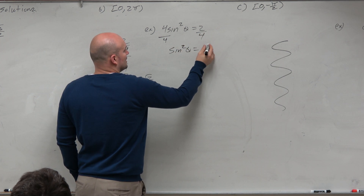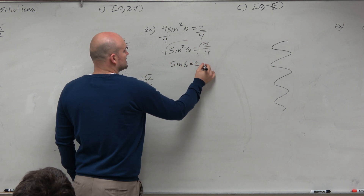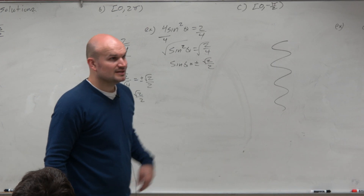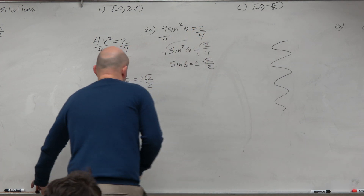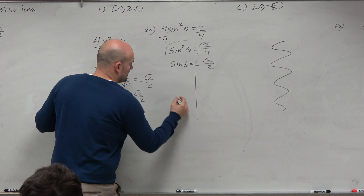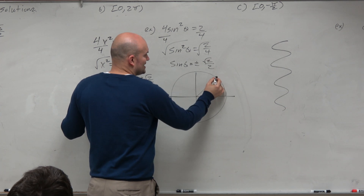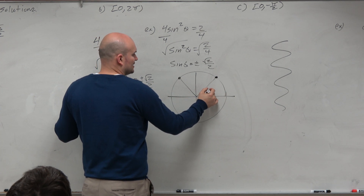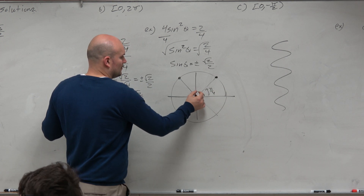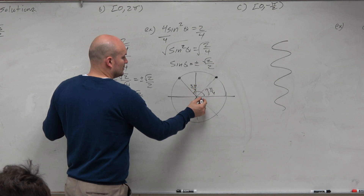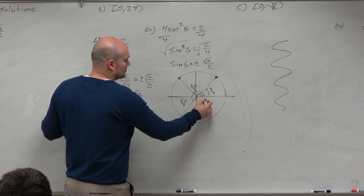So sine squared of theta equals 2 over 4. Take the square root of both sides: sine of theta equals plus or minus the square root of 2 over 2. Is this something we're familiar with based on the unit circle? Yeah, square root of 2 over 2 — I know where that is. So I draw the unit circle, and plus or minus square root of 2 over 2 gives us angles at pi over 4, 3 pi over 4, 5 pi over 4, and 7 pi over 4.